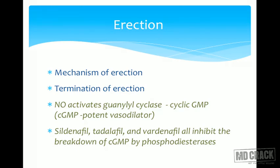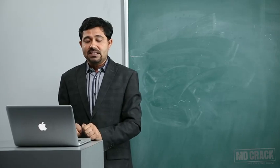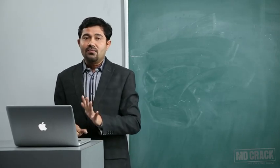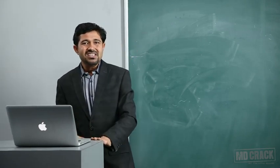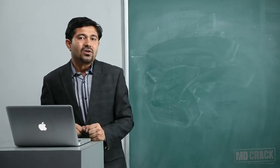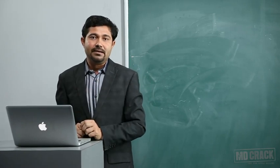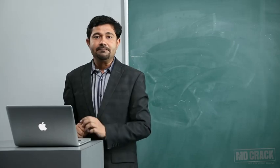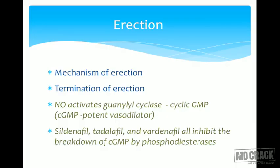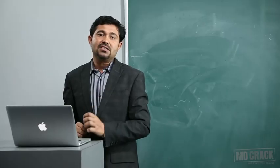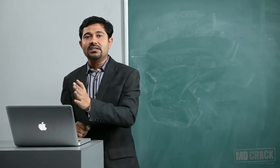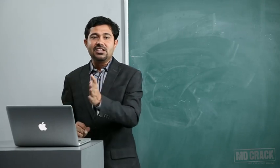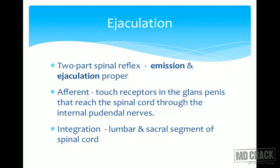A commonly used drug is sildenafil (Viagra), along with tadalafil and vardenafil, used to maintain erection for longer. A common exam question: what is the mechanism of action of sildenafil? Nitric oxide released by the nerve is normally destroyed by phosphodiesterase enzyme. When phosphodiesterase destroys nitric oxide, erection terminates. Sildenafil blocks phosphodiesterase, so nitric oxide remains for longer, vasodilation is maintained longer, and erection is maintained longer.